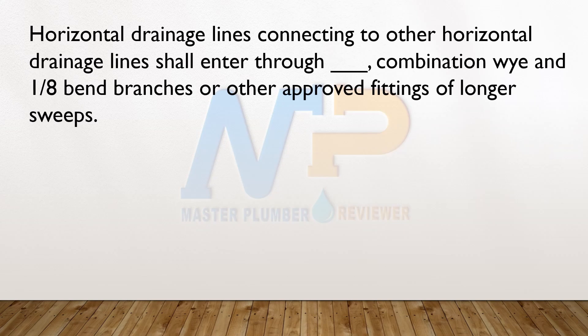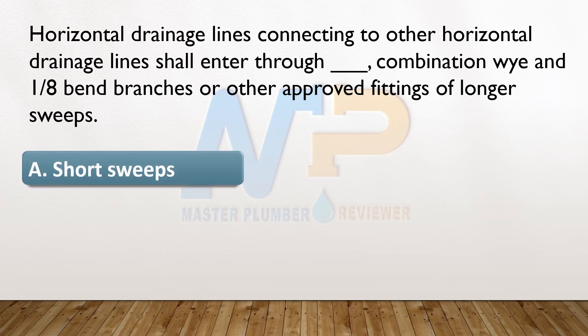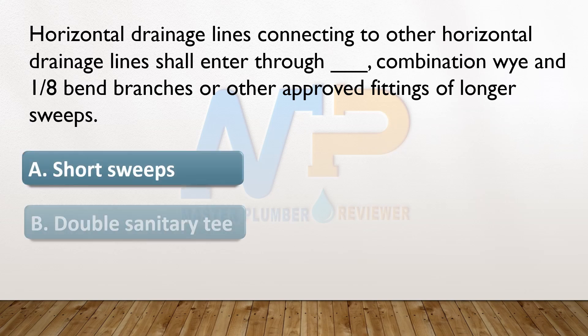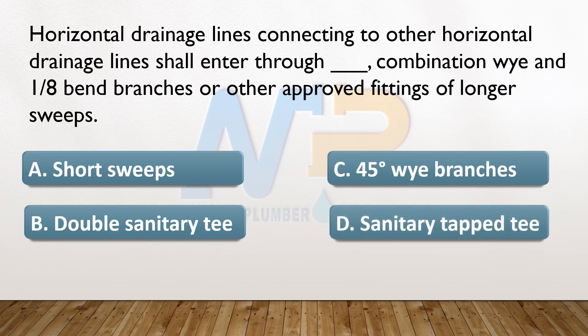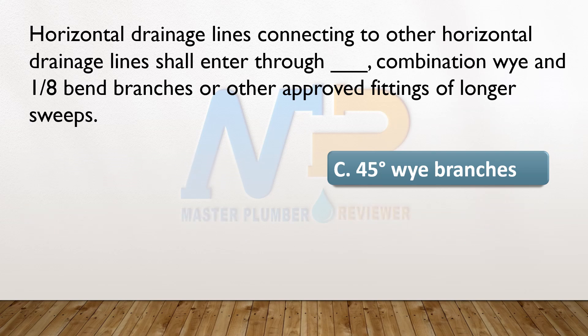Horizontal drainage lines connecting to other horizontal drainage lines shall enter through blank, combination Y and 1/8 bend branches or other approved fittings of longer sweeps. A. Short sweeps. B. Double sanitary T. C. 45 degrees Y branches. D. Sanitary tap T. The answer: C. 45 degrees Y branches.